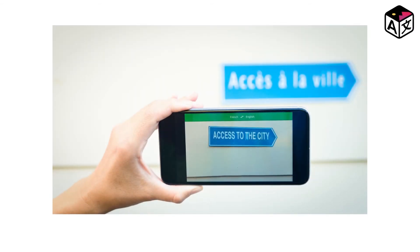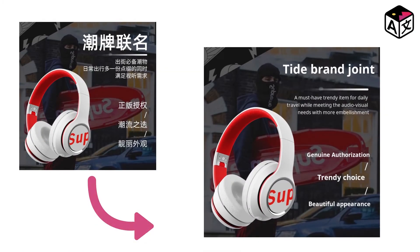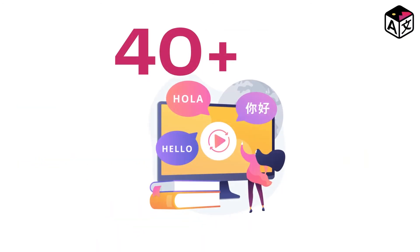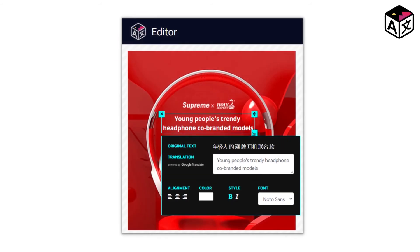What makes Image Translate different from other translating apps? Other translation apps just provide you a translation of text in the image, but they don't provide the same image with translated text. Now you can create product images that speak the language of the people you are targeting. Image Translate has support for 40 plus languages, and you can also edit the translated text — change the font or size, change the color, or make the text bold or italic.